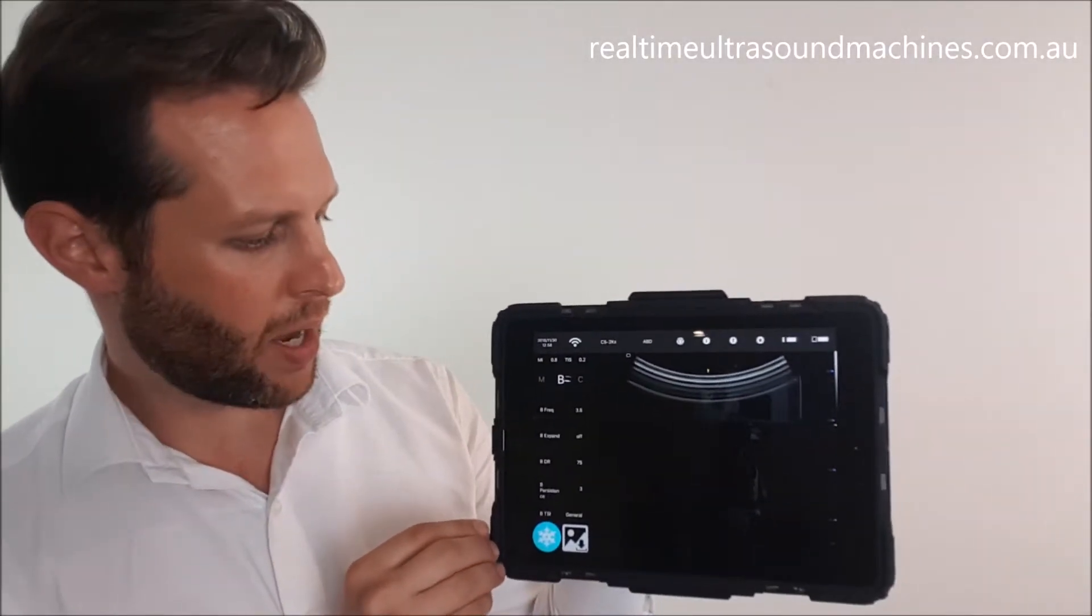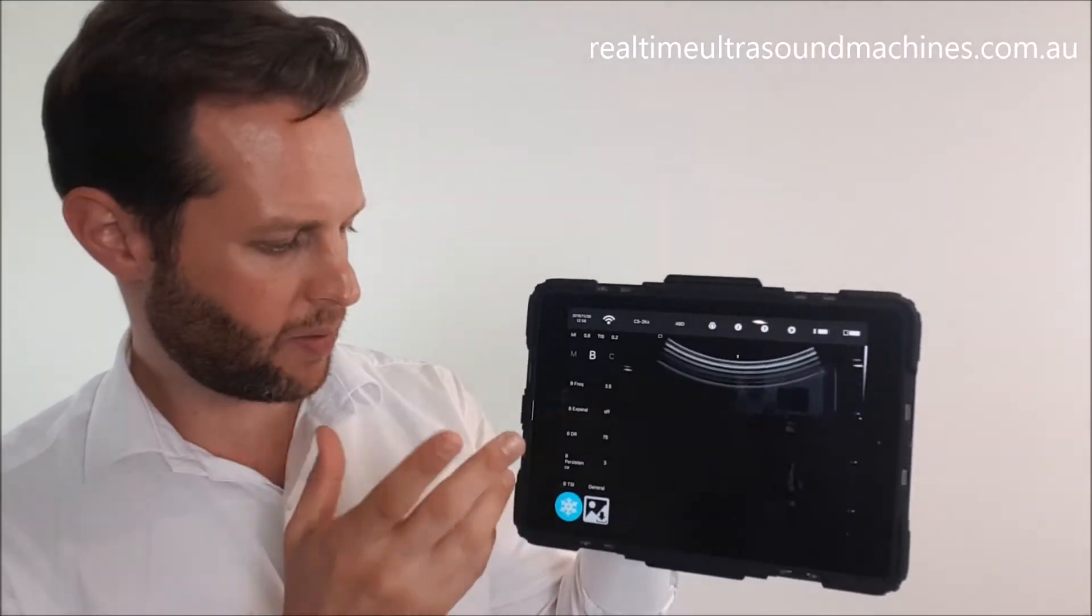To get back to normal B-mode imaging, just slide the slider back across to B. Now if you've got an image you want to save or measure, all you have to do to save the image is hit this little button here and it'll save it to the camera roll.